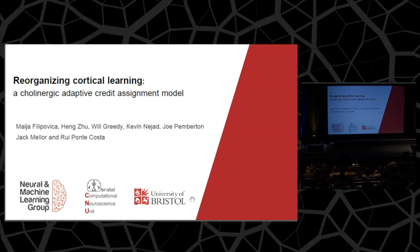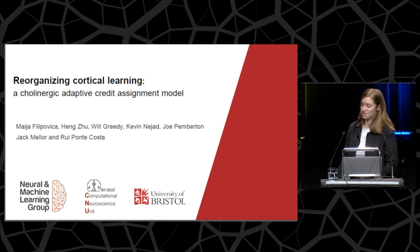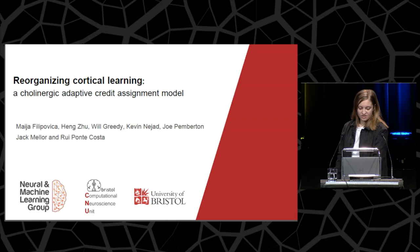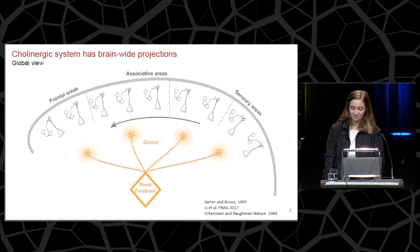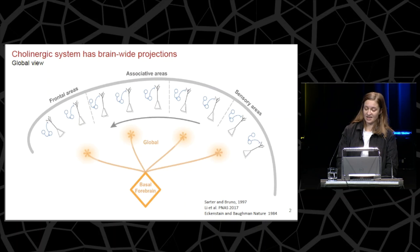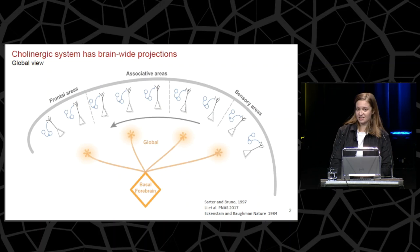Hi, my name is Maya. I'll be presenting part of my ongoing PhD work which focuses on adaptive learning and the cholinergic system. The main source of acetylcholine in the cortex is the cholinergic basal forebrain, which consists of a relatively small number of very large cholinergic neurons. Each of these neurons innervates a large cortical area, which initially led to the view that cholinergic modulation is a diffuse or global process.